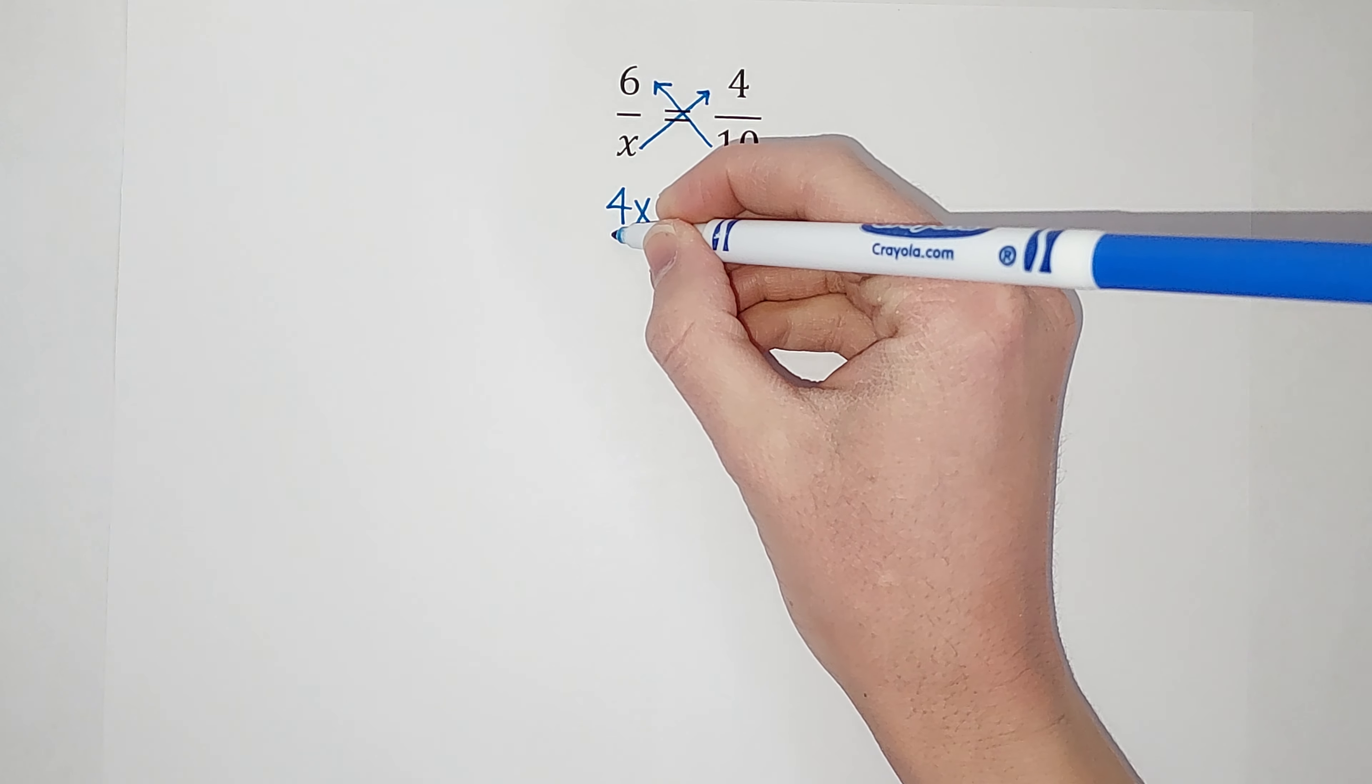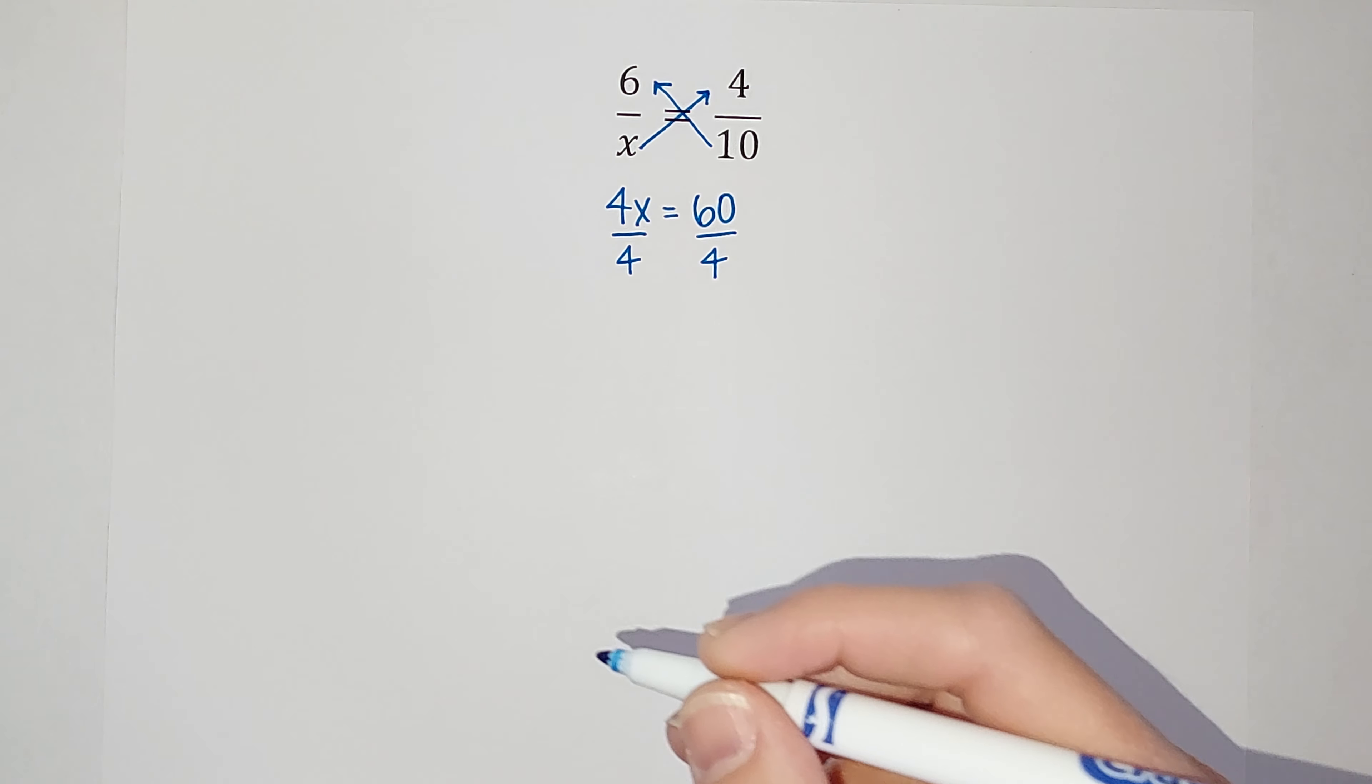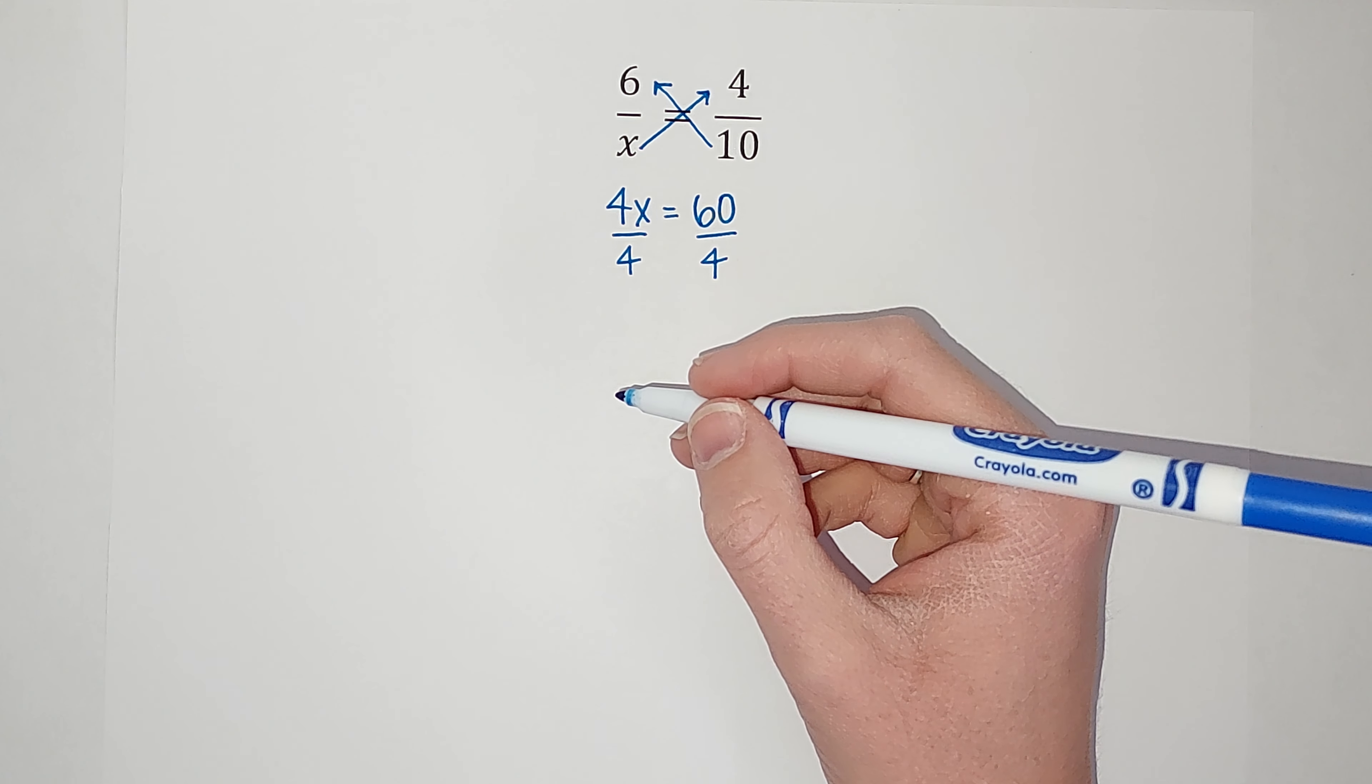All right, so now we have 4x equals 60 and it looks a lot more simple, right? I'm just trying to get x alone. So I'm going to divide by 4 on both sides.